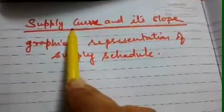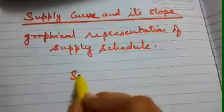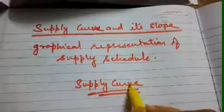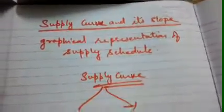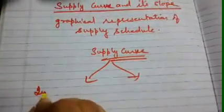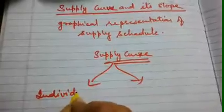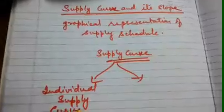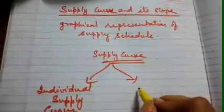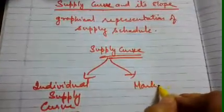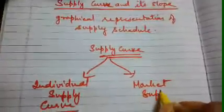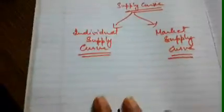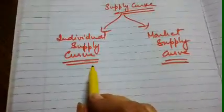Supply curve could be of two types: individual supply curve and market supply curve. First, we will be talking about the individual supply curve.